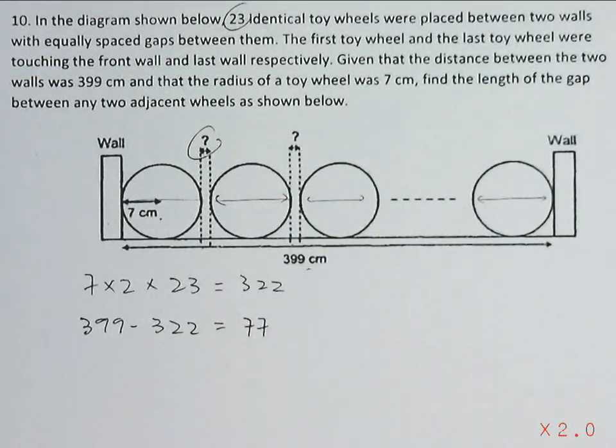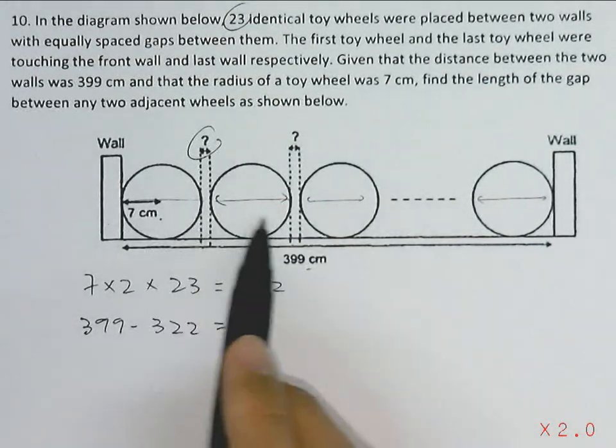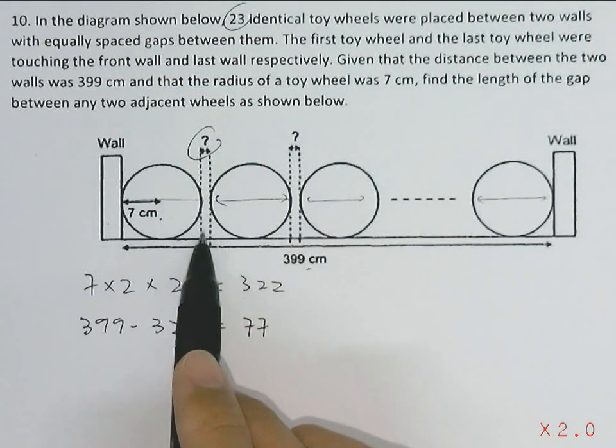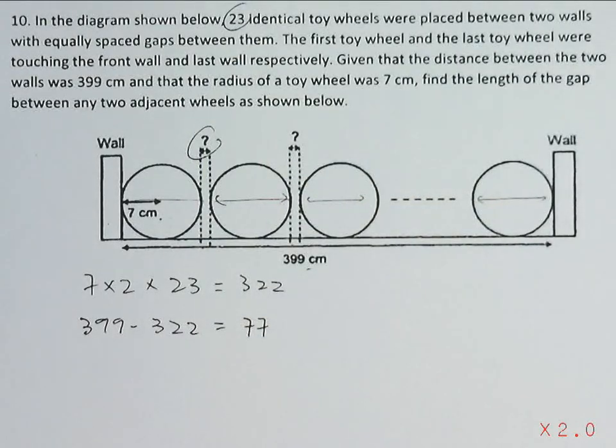Now we want to find out how many gaps were there between these 23 toy wheels. Since every two toy wheels there will be one gap, for 23 toy wheels there will be 22 gaps.